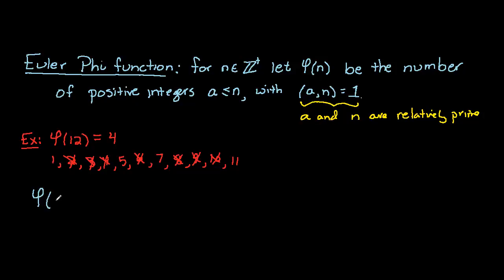Phi of p to the a, where p is a prime, so let's denote that here. Phi of p to the a equals p to the a minus 1 times the quantity p minus 1.